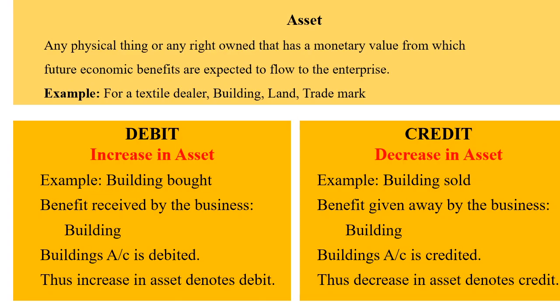Asset: any physical thing or any right owned that has a monetary value from which future economic benefits are expected to flow to the enterprise is known as an asset. Example for a textile dealer: building, land, trademark. Debit denotes increase in asset. Example: building bought. The benefit received by the business is the building, and so the building's account is debited. Thus, increase in asset denotes debit.